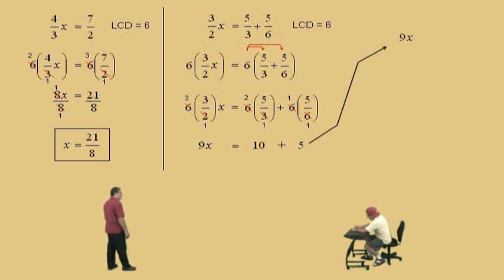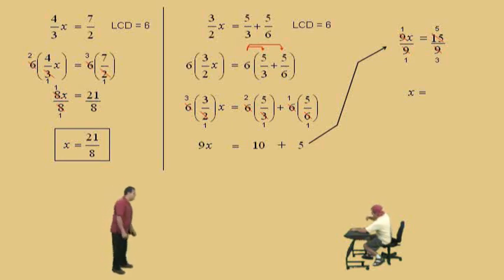9x equals, what's 10 plus 5? Fifteen. To get the 1x, we have to divide both sides by nine, because 9 over 9 is 1 over 1, which is 1x. Does 15 over 9 reduce? Yes. What number divides evenly into a 15 and a 9? A 3. 15 divided by 3 is 5, and 9 divided by 3 is 3, so our final answer is 5 over 3.